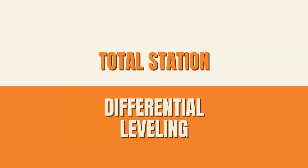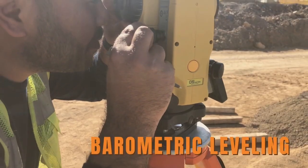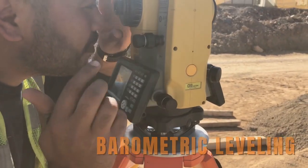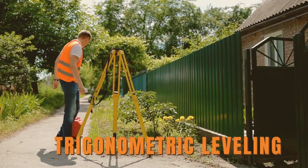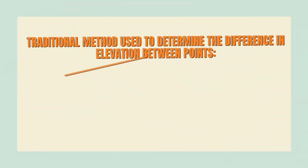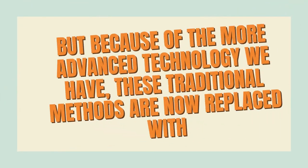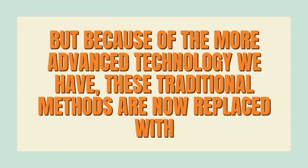Total Station Differential Leveling. Traditionally, taping, barometric leveling, trigonometric leveling, and differential leveling are used to determine the difference in elevation between points. But because of the more advanced technology we have, these traditional methods are now replaced with modern surveying.